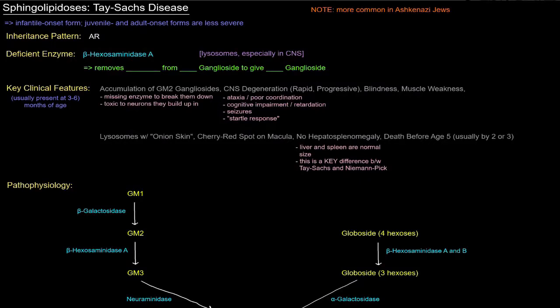In this video, I want to talk about Tay-Sachs disease, which is a sphingolipidosis. I'm particularly going to talk about the infantile onset form. There are juvenile and adult onset forms, but they are less severe and I'm not going to talk about them here.